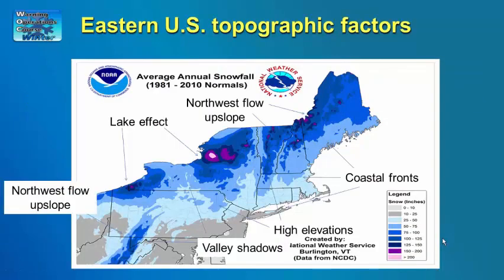Looking at the average annual snowfall for the northeast U.S. more closely, it's easy to see features associated with topography. Higher elevation snowfall along the west slopes of the Appalachian Mountains from southwest Pennsylvania down through eastern West Virginia can be easily seen. The snow belts east of Lakes Erie and Ontario show up easily, and areas of relatively high snowfall can be seen in northeast Pennsylvania and western New England associated with higher elevations in those areas.